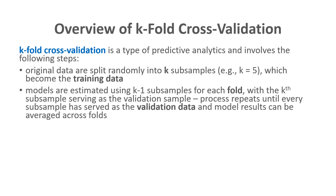Models are estimated using k minus one subsamples for each fold. The kth subsample serves as the validation sample for each fold. This process repeats until every subsample has served as the validation data, and then the model results can be averaged across the folds.